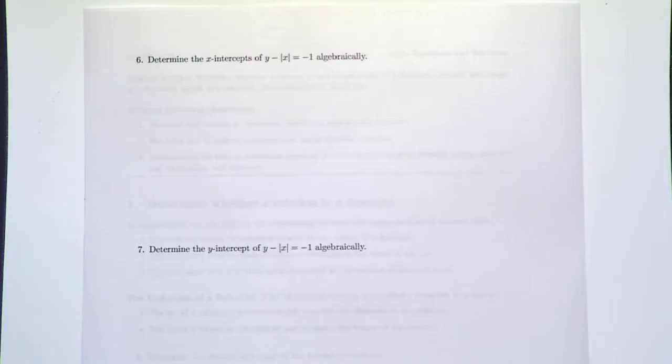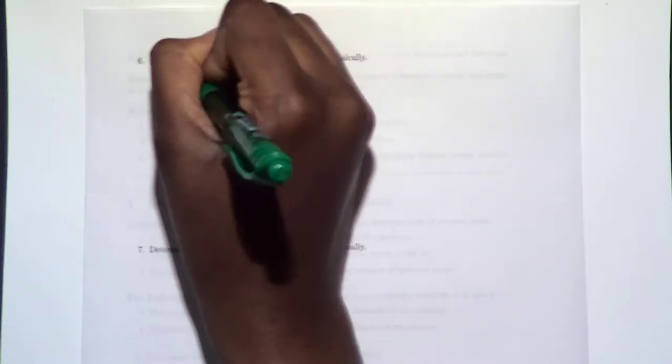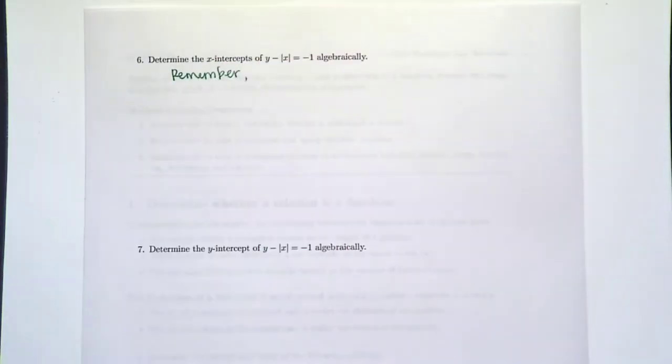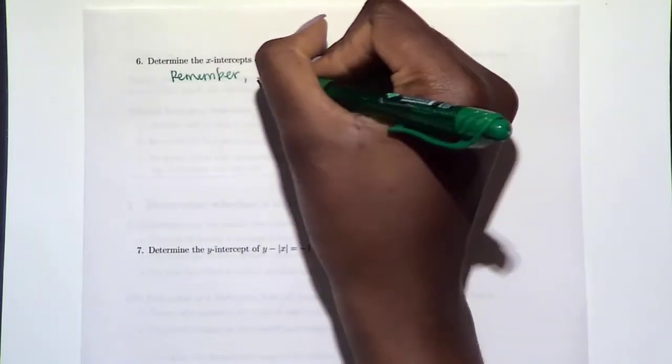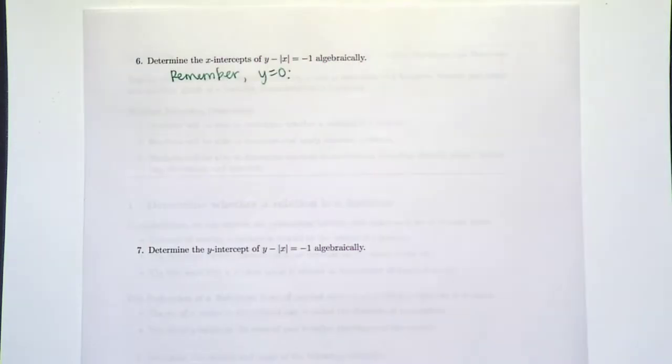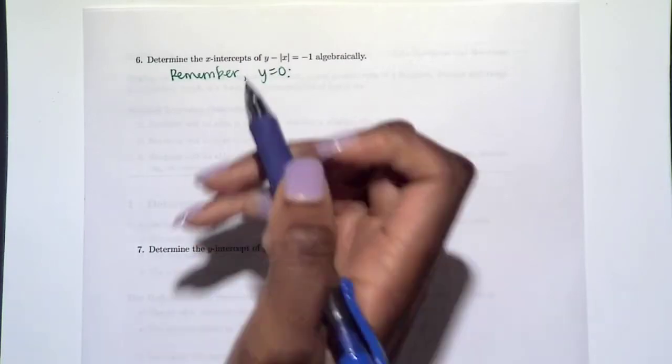Example six says determine the x-intercepts for our same equation y - |x| = -1, and we want to do it algebraically. So remember, what's the one thing we want to remember about x-intercepts? We have to remember x-intercepts, y equals zero. So that's what we'll use to answer this question. We're just going to set y equal to zero.